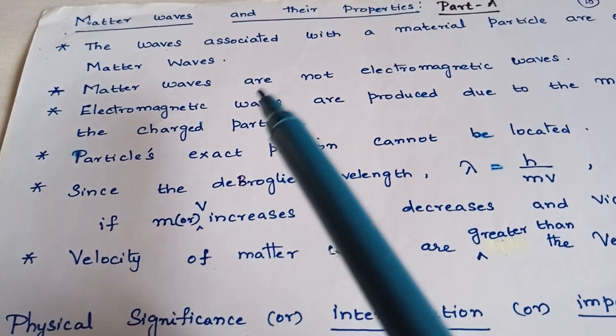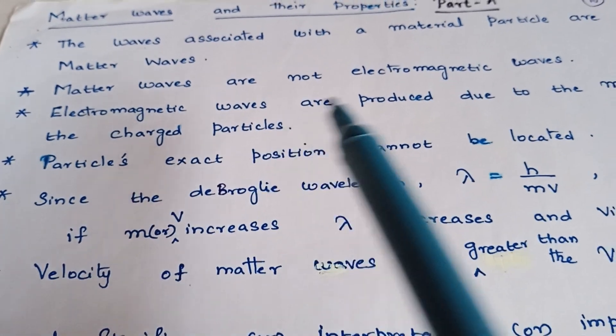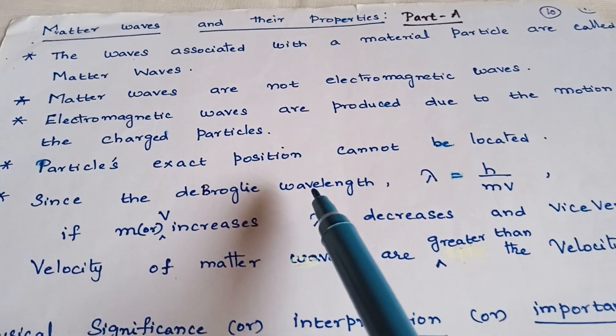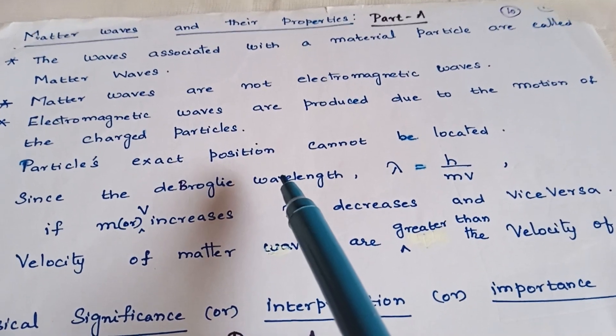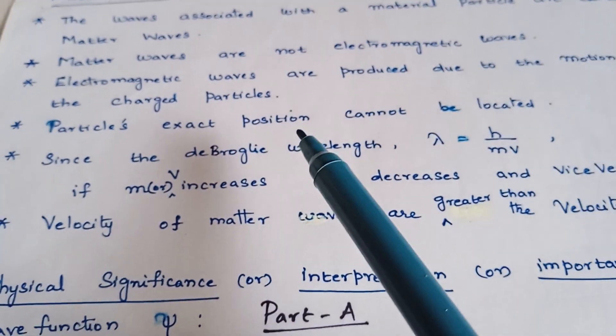These matter waves are not electromagnetic waves because electromagnetic waves are produced due to the motion of the charged particles, but the matter waves are associated with the charged or uncharged moving particles.